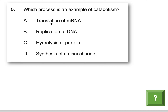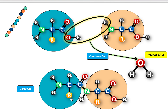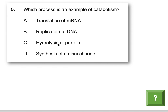Looking at the options: A, translation of mRNA — this is the process of reading mRNA to put amino acids together, so it's anabolic, not catabolic. B, replication of DNA — replication means doubling it, so that's also anabolism. C, hydrolysis of a protein — you're breaking it apart, so that is a catabolic reaction — that's our answer. D, synthesis of a disaccharide — synthesis means making, which is anabolism, not catabolism. So the answer is C.